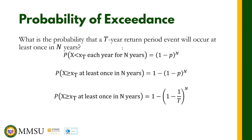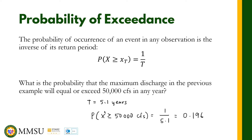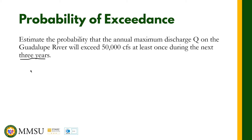Now, what is the probability that a T-year return period event will occur at least once in n years? Using this concept of probability, the formula is: the probability that x is greater than or equal to the extreme event x at least once in n years is equal to 1 minus (1 minus 1/T) raised to n. Consider the example: estimate the probability that the annual maximum discharge in the Guadalupe will exceed 50,000 cfs at least once during the next three years.